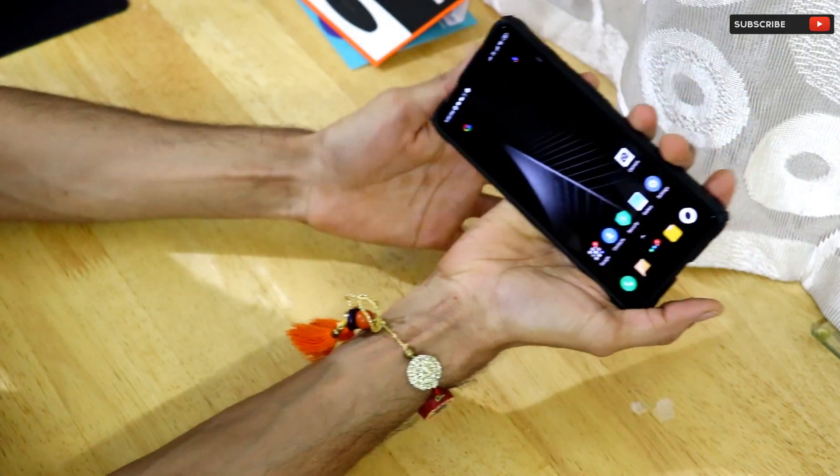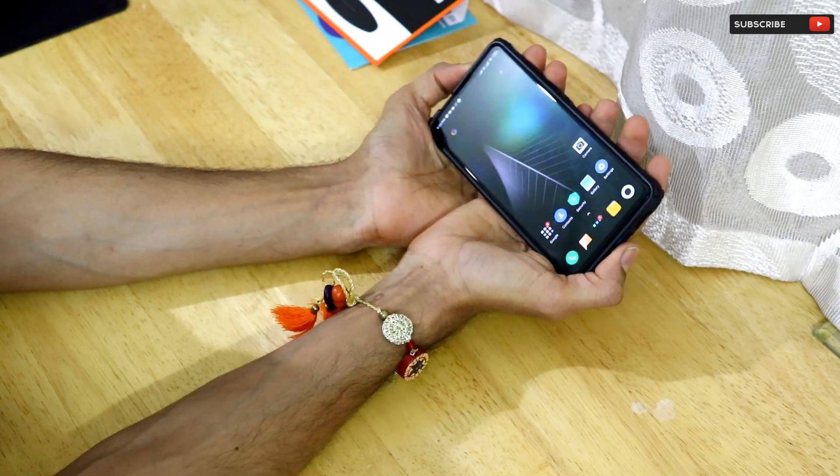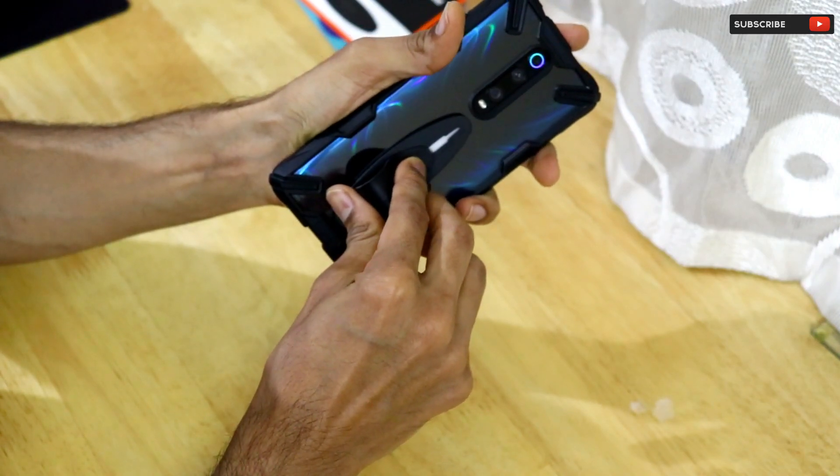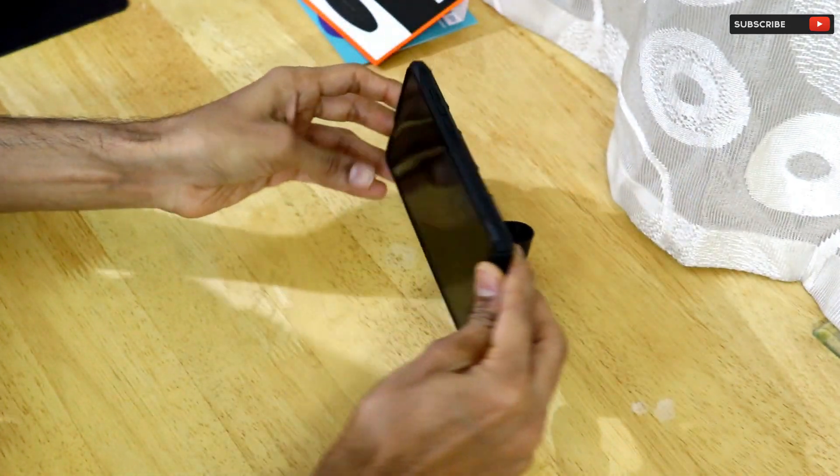As you can see, you can use your smartphone like this for watching movies or something. The third stage is where you can push this grip stand to the end and you can easily place your smartphone on the table like this. You can easily watch movies or any TV shows that you're interested in.